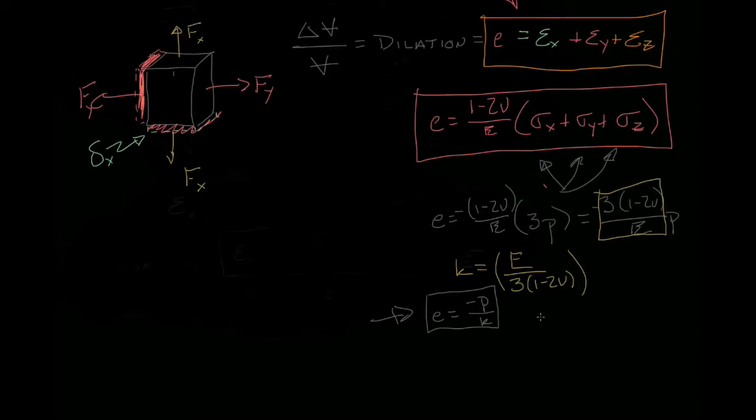So for instance, let's pretend that the Poisson ratio is one-half. Now, if the Poisson ratio is one-half, we're going to have a denominator that goes to zero.